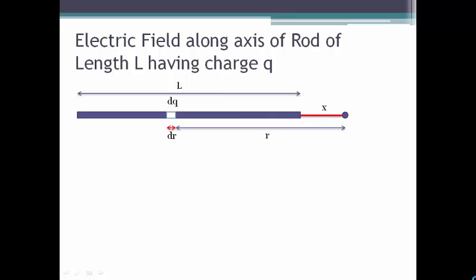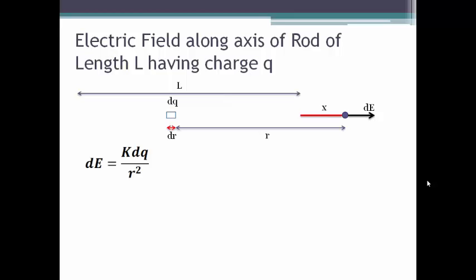Now the next step is to find electric field only due to dq. So electric field due to dq, if we assume positive charge distribution, will be towards the right side pointing away from the charge having magnitude dE. So by the definition of electric field, dE will be equal to k dq by r square.